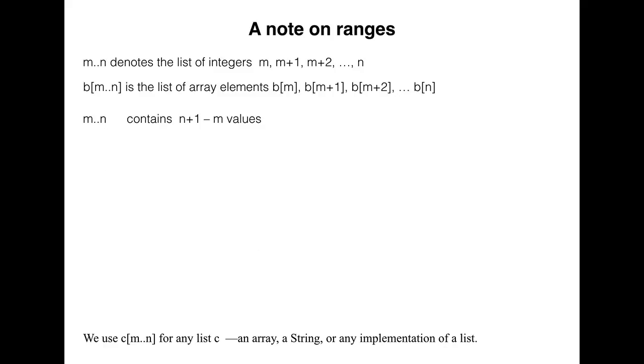The number of values in the range m..n is n plus 1 minus m. The last value of the range is n, and it is followed by n plus 1. We use this fact to give a mnemonic for remembering the formula for the number of values. It's the follower minus the first, n plus 1 minus m. A few examples will make this clear.